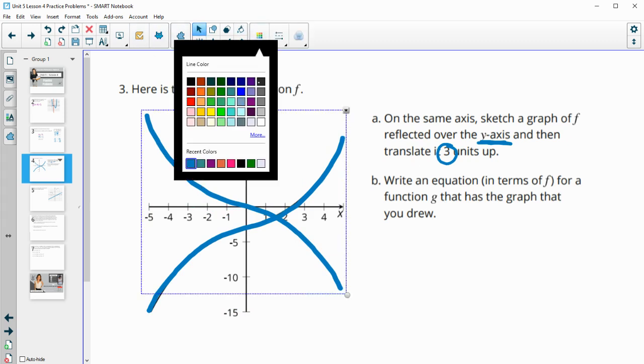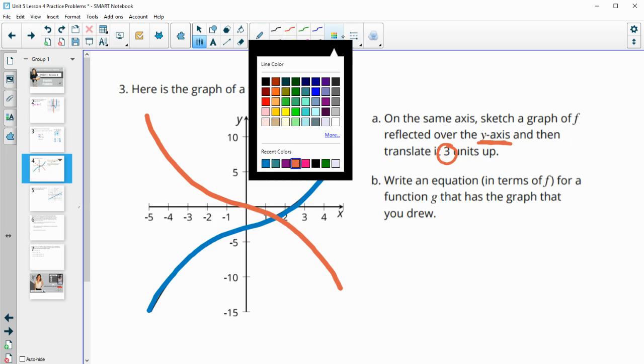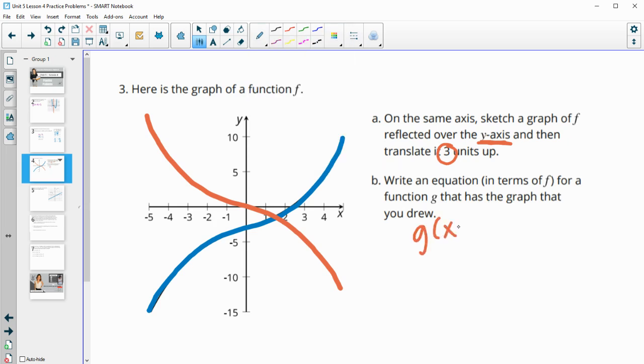And then let me change this color. So this one is for part a. And then part b says write an equation in terms of f for a function g that has the new graph that you drew. So for this new graph we'll call it g of x. That's going to equal again a reflection over the y-axis which will put a negative inside of our function. And then up three puts a plus three on the outside of our function.